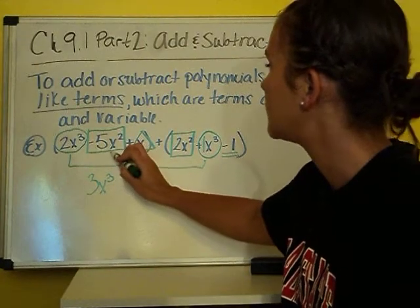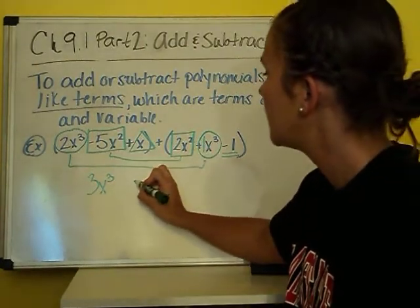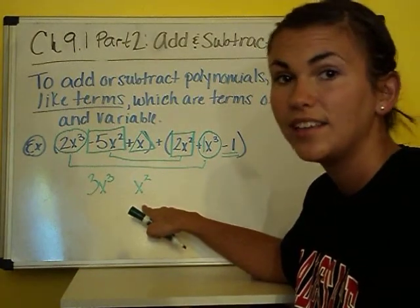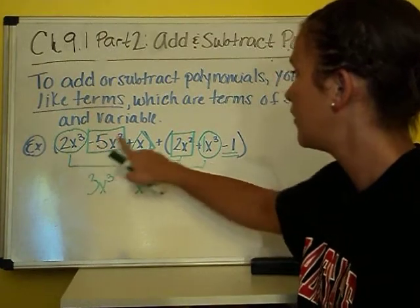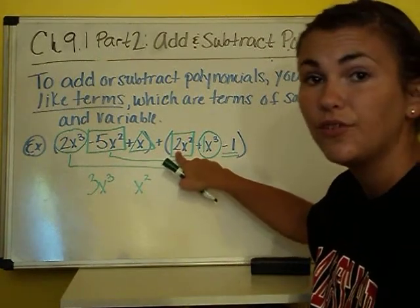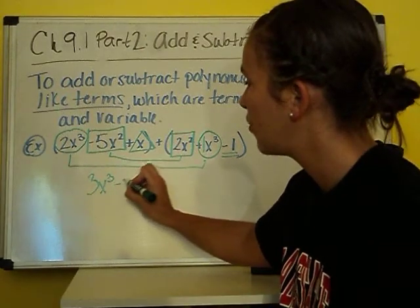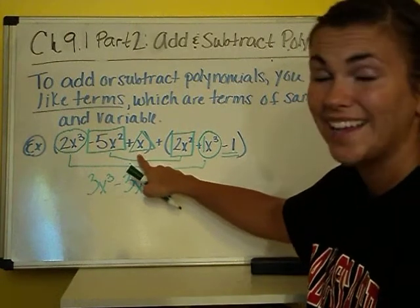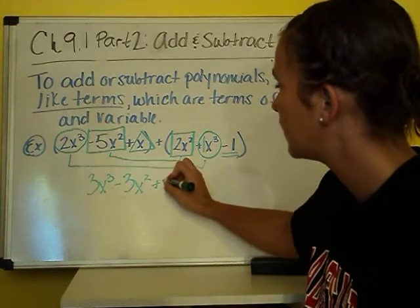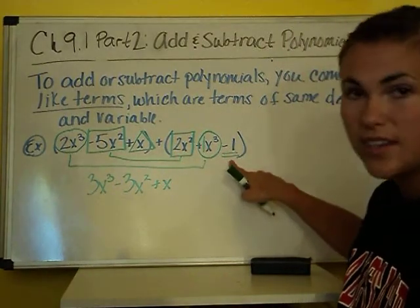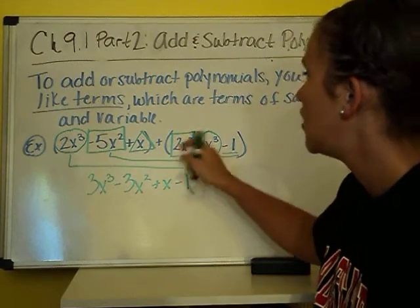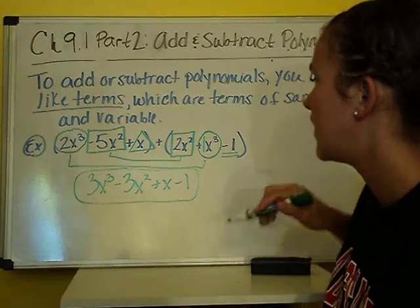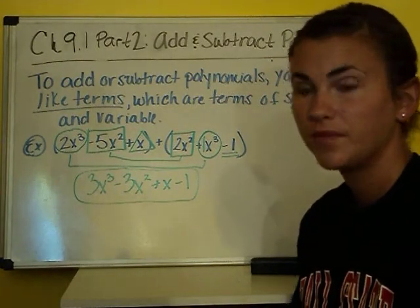Now moving on to my x squareds — I keep the label x squared and add the coefficients. I have negative 5 plus 2, which is negative 3, so I have negative 3x squared. The x cannot combine with anything else, so that stays. And the negative 1 does not combine with anything else either, so that stays as well. So these two polynomials, when added together, give you 3x cubed minus 3x squared plus x minus 1.